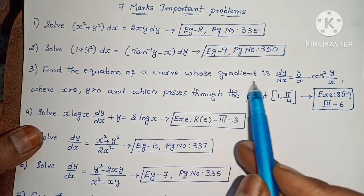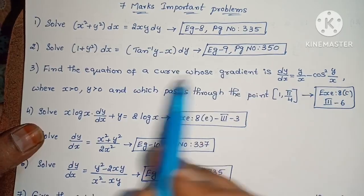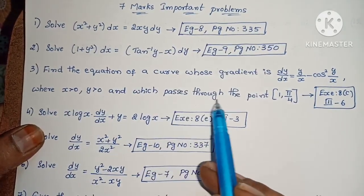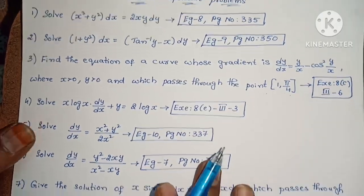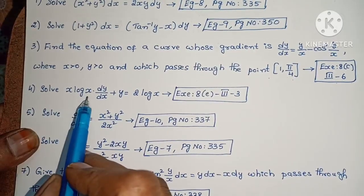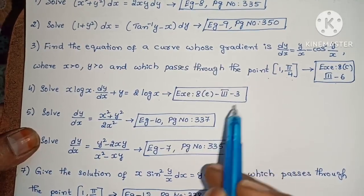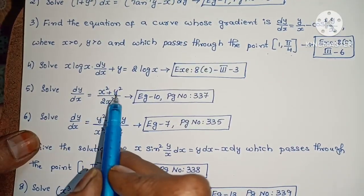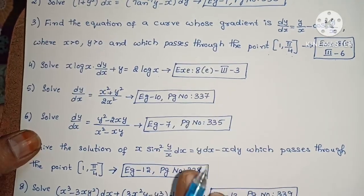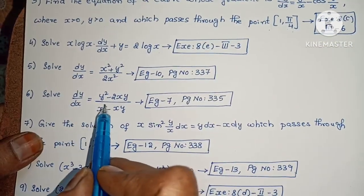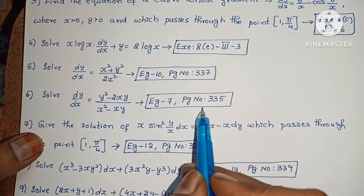Next, find the equation of a curve whose gradient is dy/dx equals y/x minus cos²(y/x), where x > 0, y > 0, and which passes through the point (1, π/4). Next, solve x·log(x)·(dy/dx) plus y equals 2·log(x). Next, solve dy/dx equals (x² plus y²)/(2x²). Example 10, page number 337. Next, solve dy/dx equals (y² minus 2xy)/(x² minus xy). Example 7, page number 335.